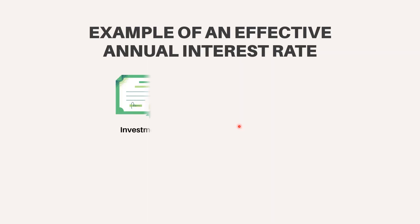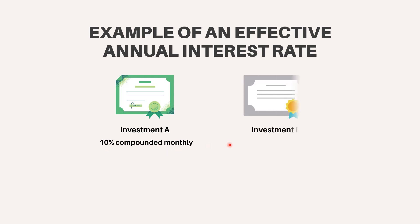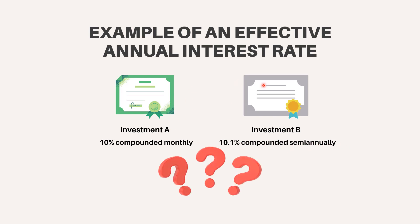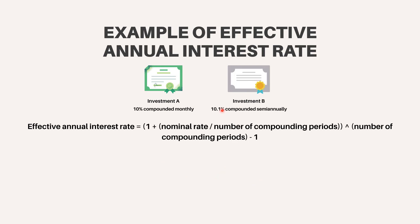Example of effective annual interest rate. Consider these two offers: Investment A pays 10% interest, compounded monthly. Investment B pays 10.1%, compounded semi-annually. Which is the better offer? In both cases, the advertised interest rate is the nominal interest rate. The effective annual interest rate is calculated by adjusting the nominal interest rate for the number of compounding periods that the financial product will undergo in a period of time — in this case, that period is 1 year.